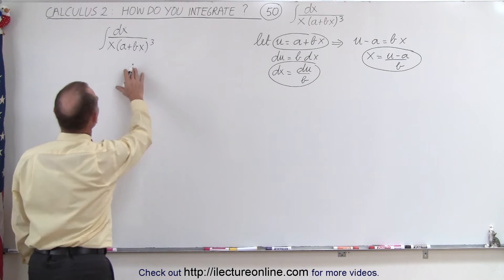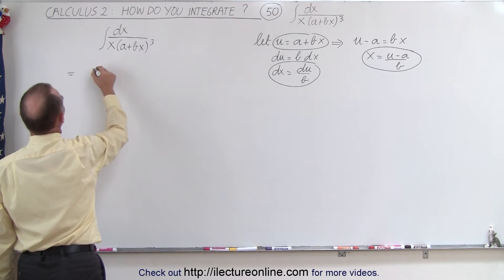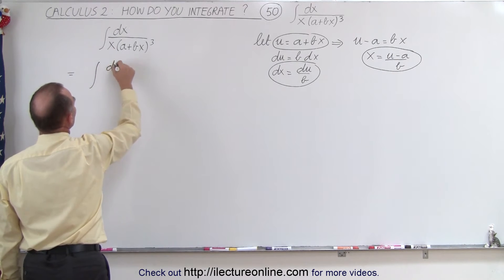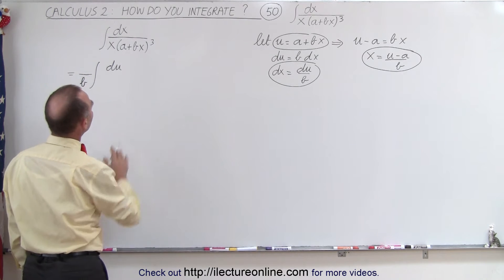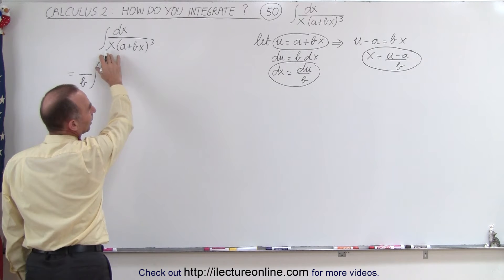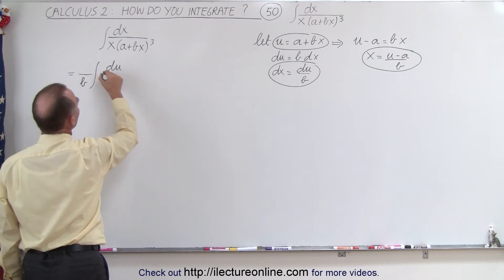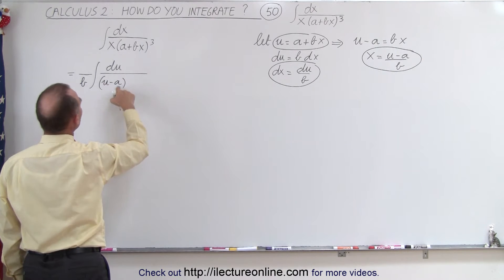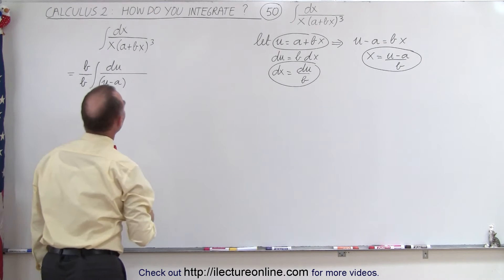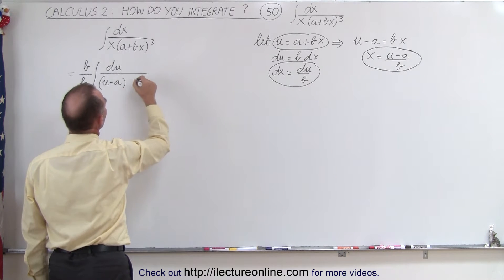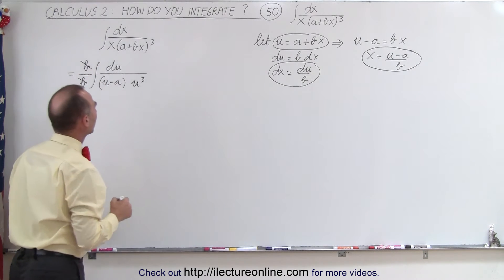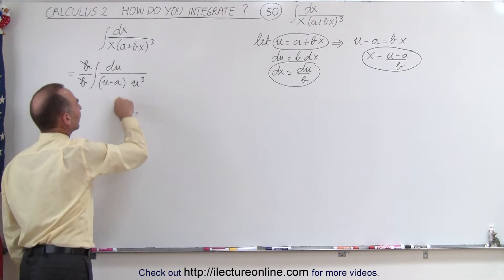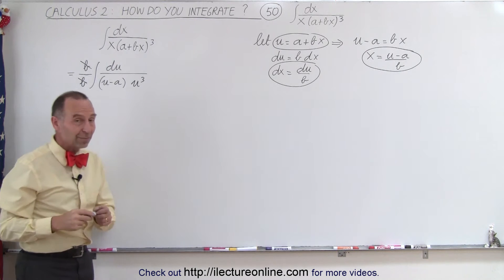Now let's see what we're going to end up with. So dx turns into du divided by b, so the b goes in the denominator — we'll take it outside the integral sign. The x will become u minus a, so we have u minus a divided by b, which we can put outside. And then we have u cubed in the denominator. So the b's cancel out here. Now we've turned this into an integral like this, which doesn't seem to help us too much.